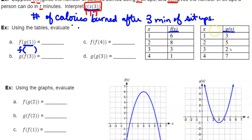For f of g of 1, I need to determine what g of 1 is first. I'm going to come over to the g table. When x equals 1, what is the y value for the g function? It is 3. So g of 1 equals 3. Now I take that 3 and put it into the f function. Going to the f table, when x equals 3, the matching y value is 3. Therefore, f of g of 1 equals 3.